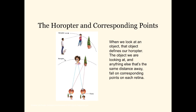How does it do that? There are certain characteristics of how the images on the left and right eye differ, and one of the most important factors is what object we are actually looking at. So if this individual is looking at this woman, his fixation is on her face — and that creates something interesting.